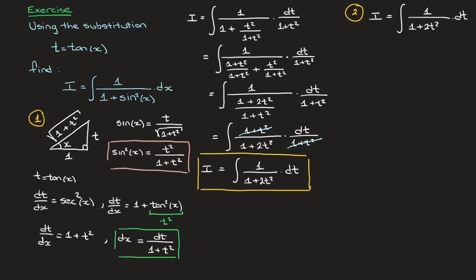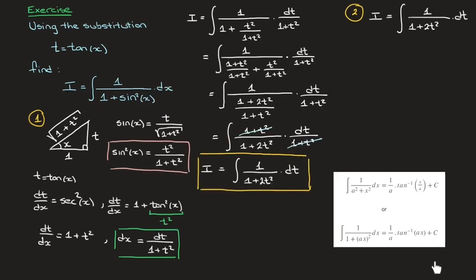To integrate this, we use one of our standard integrals — one we simply have to know — which involves arctan, or inverse tan. I have a preference for the second standard result, so I'll rewrite the denominator as 1 plus the square root of 2 times t, all squared, with dt at the end.